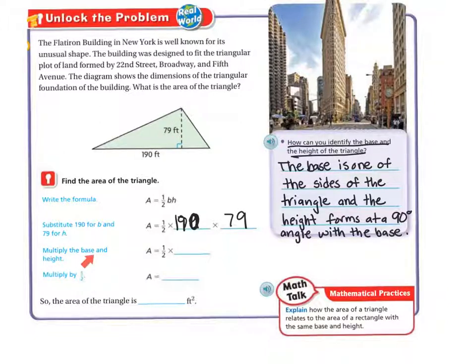All right, so now we're going to multiply the base and the height. So we have our area equals half 190 times 79. There's my 190 times 79. So 190 times 79 is 15,010. And then I'm going to multiply by half, which is essentially dividing by 2.